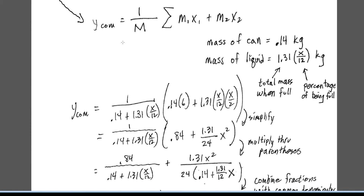So here we plug in: the total mass is the mass of the can plus the mass of the liquid. The mass of the can is 0.14 kilograms located at position 6. The second term is the mass of the liquid — 1.31 times x over 12 — times the position of its center of mass, which is x over 2.